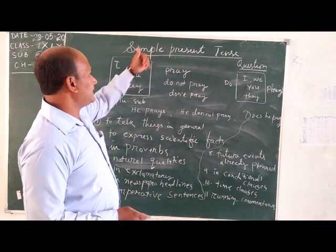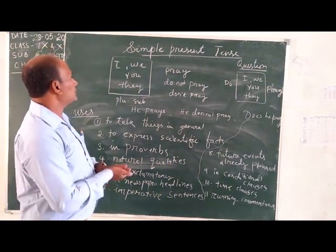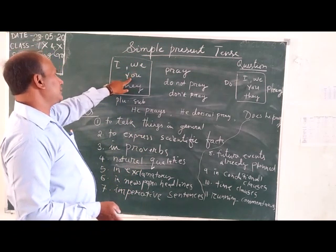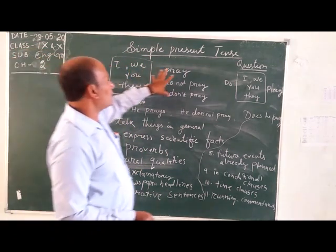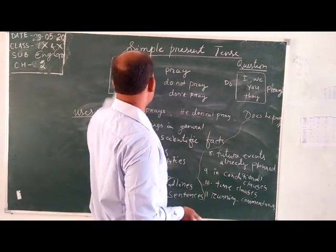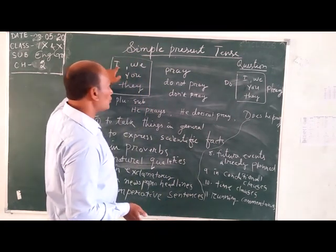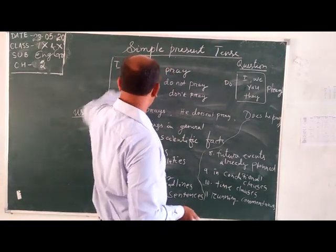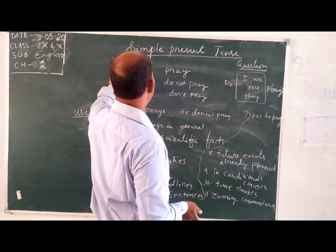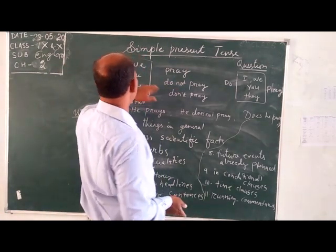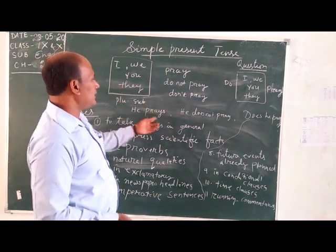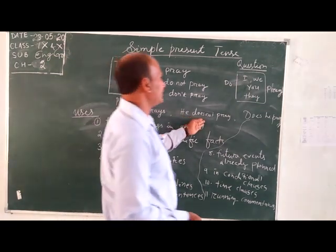Now let's discuss simple present tense. You have to know simple present tense — first person: I, we; second person: you; third person: he, she, it, they. For plural subjects we use the base form: 'we play.' For singular third person: 'he plays.' In negative: 'I do not play,' 'we do not play,' 'they do not play.' But for singular third person: 'he does not play.'